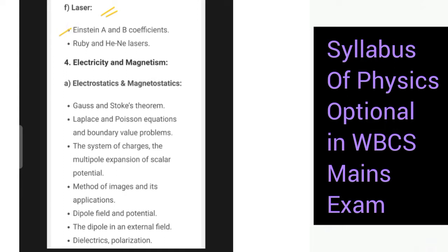Einstein A and B coefficients. Then ruby and helium-neon lasers. Electricity and magnetism is the next section. It has electrostatics and magnetostatics: Gauss and Stokes theorem, Laplace and Poisson equations and boundary value problems, the system of charges, the multipole expansion of scalar potential. Then method of images and its applications, dipole field and potential, the dipole in an external field, dielectrics polarization.